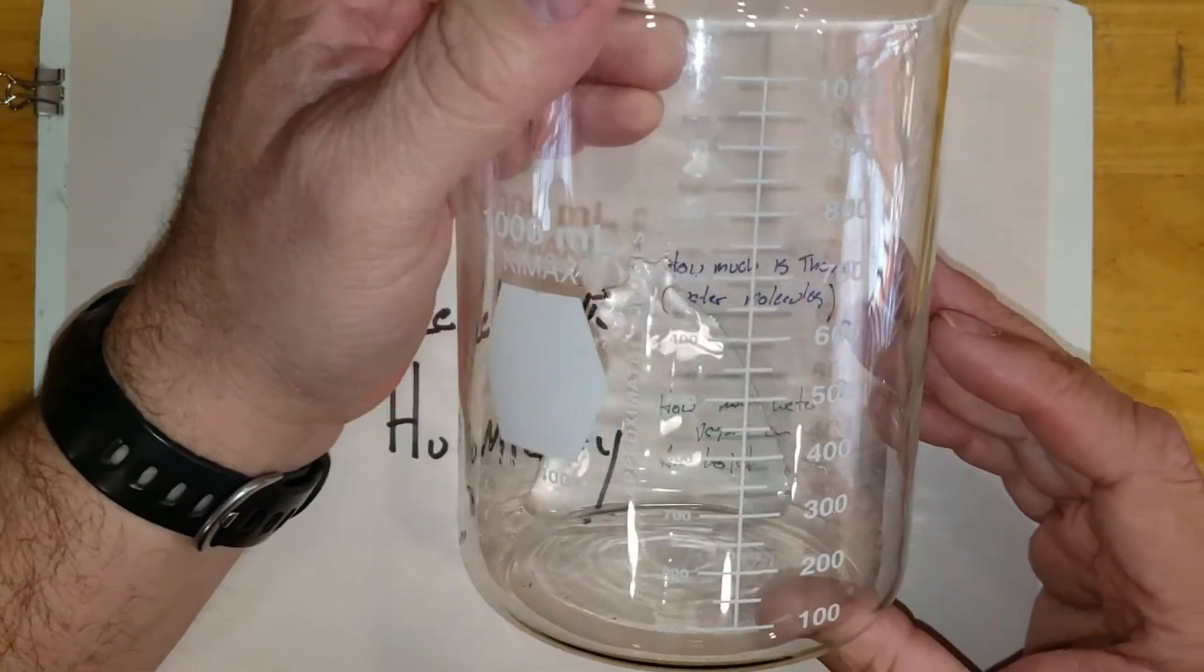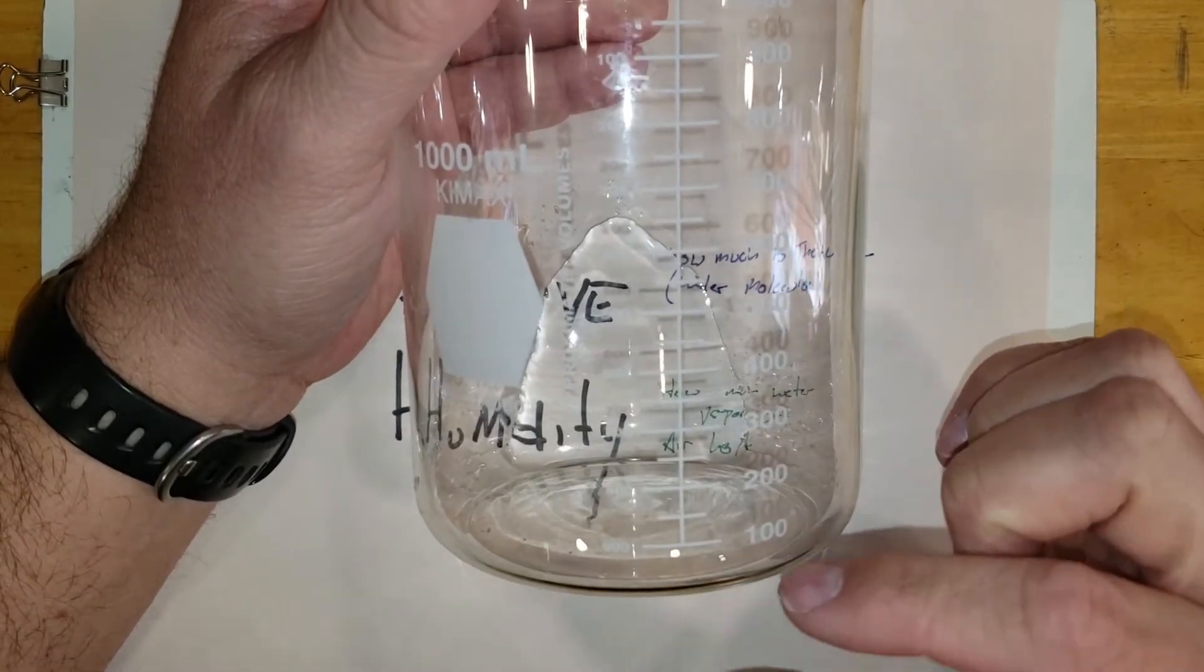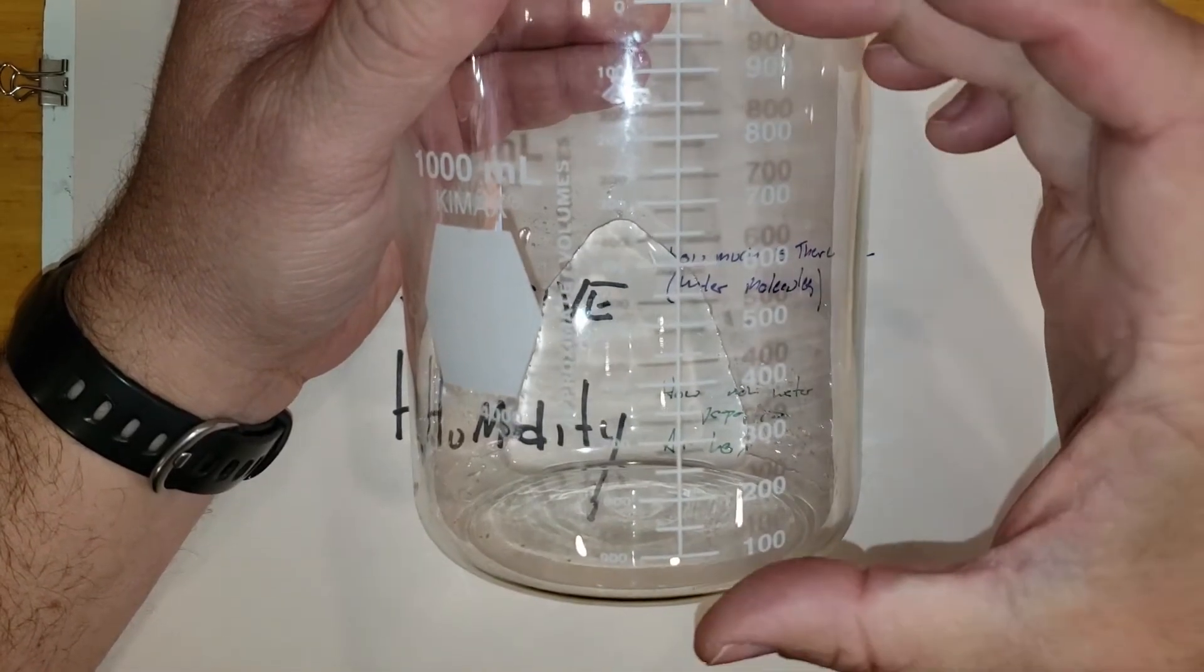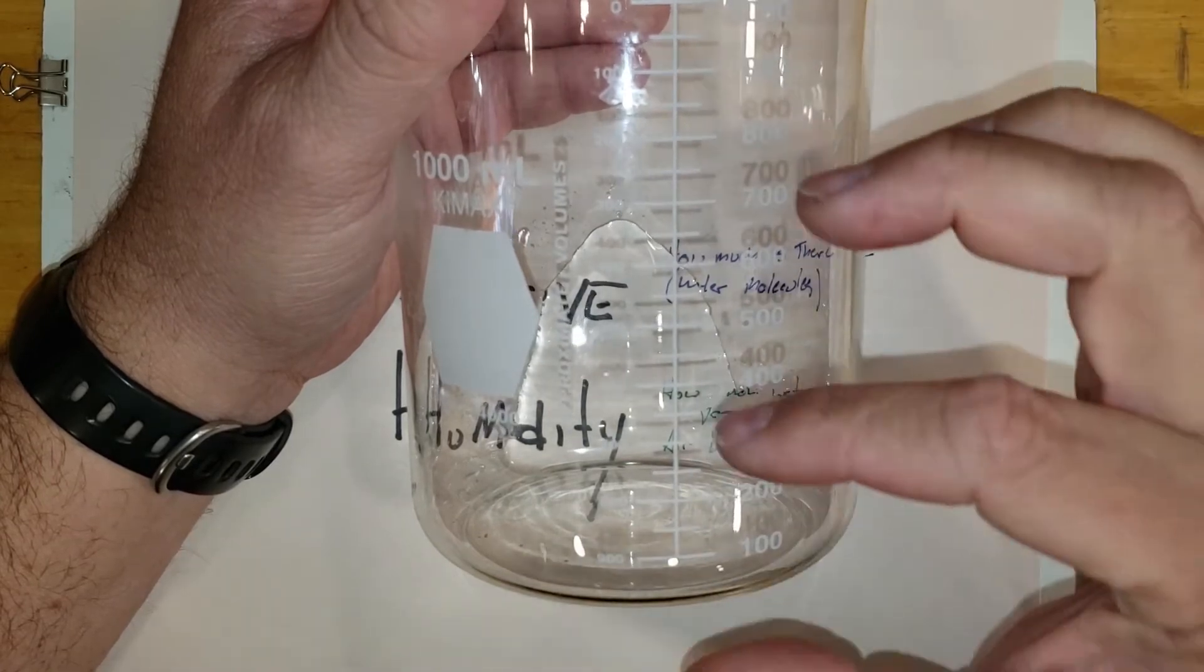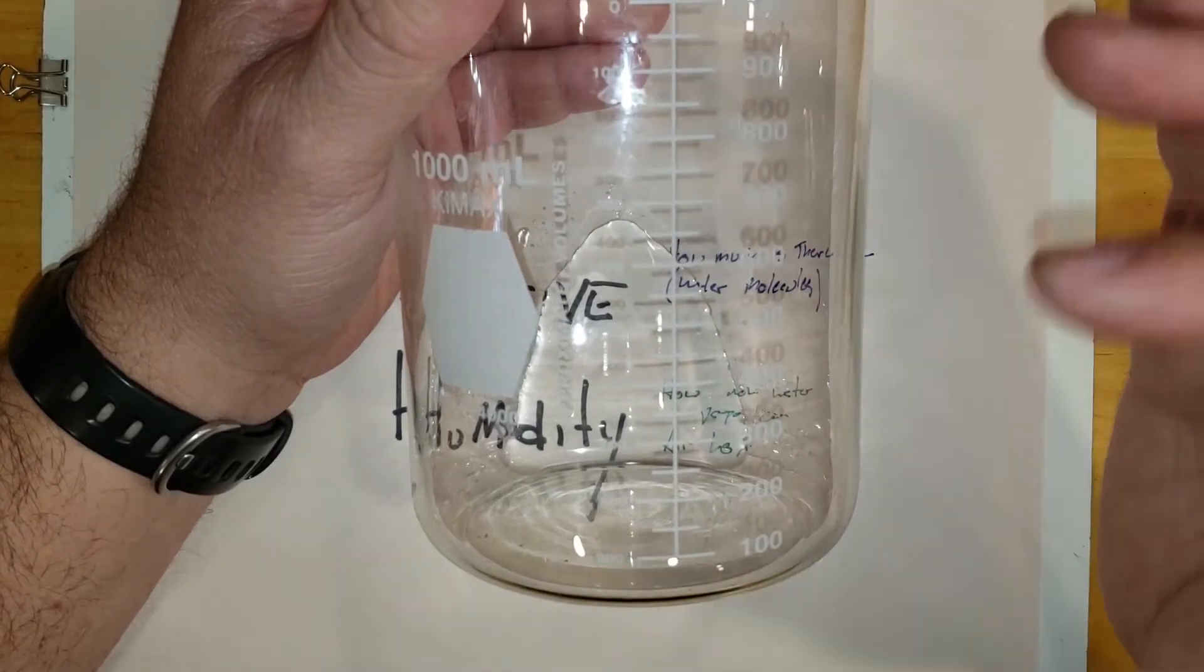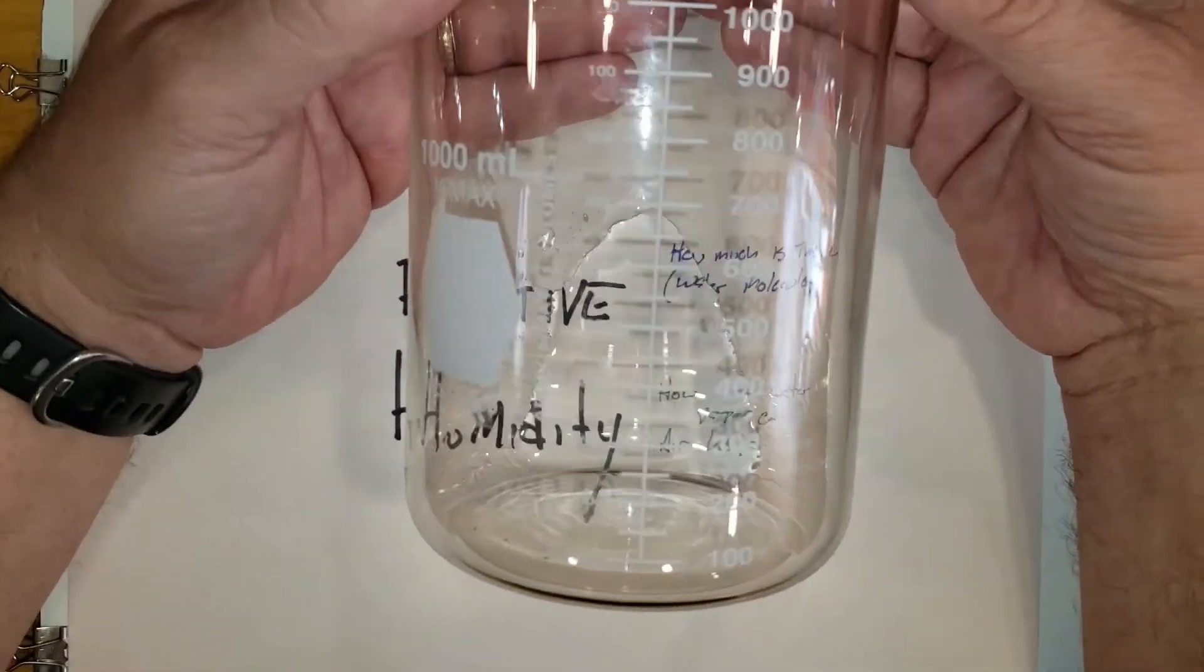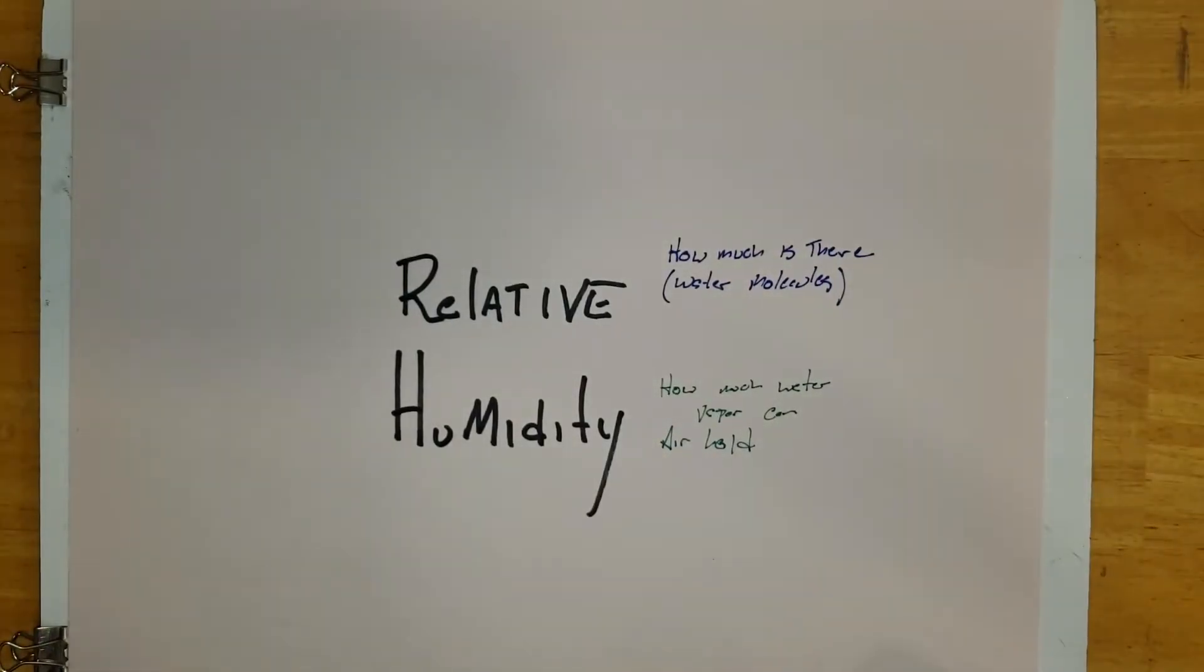So if I had my beaker here and it holds up to a thousand and I only had 500 in, then we could say it's 50% full, or if I had 300 out of a thousand, we'd say it's 30% full. Well, our air mass is kind of like this, and it changes shape based on the temperature, and the amount of water vapor that's actually in there changes as well. So let's start to understand these ideas a little bit more.